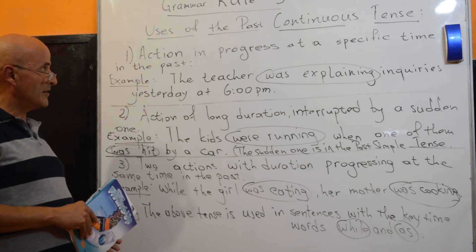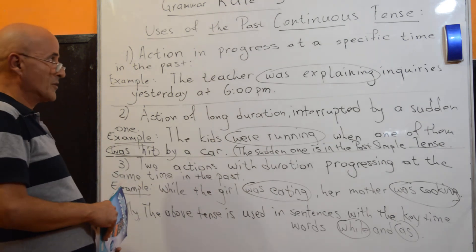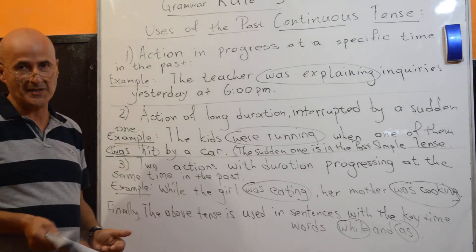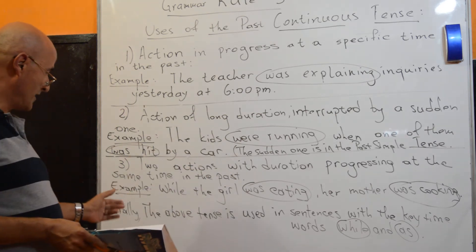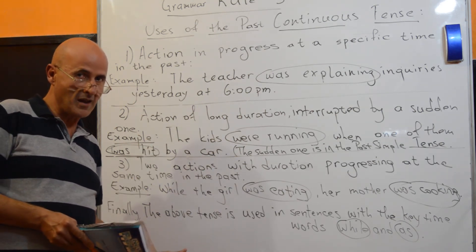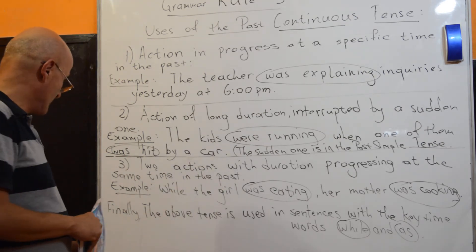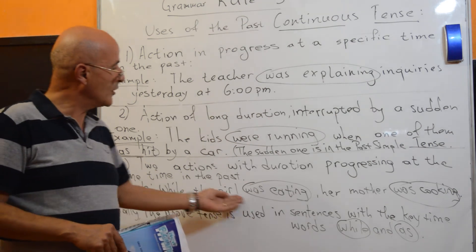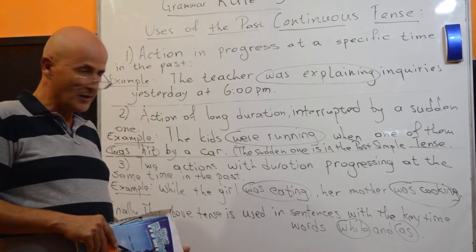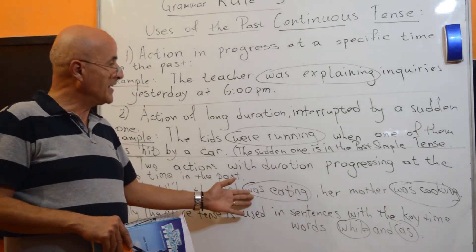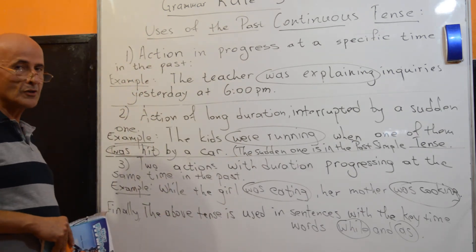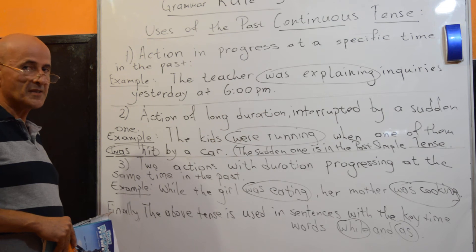Number three — the third and last use of the past continuous tense: two actions with duration progressing at the same time in the past. In this example, both verbs are in the past continuous tense and were in progress simultaneously. For example, 'While the girl was eating, her mother was cooking.' Both 'was eating' and 'was cooking' are in the past continuous tense, happening at the same time in the past.